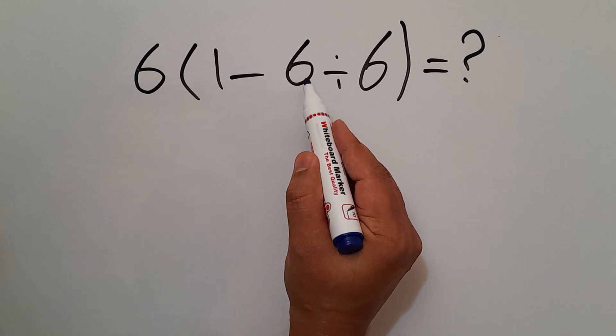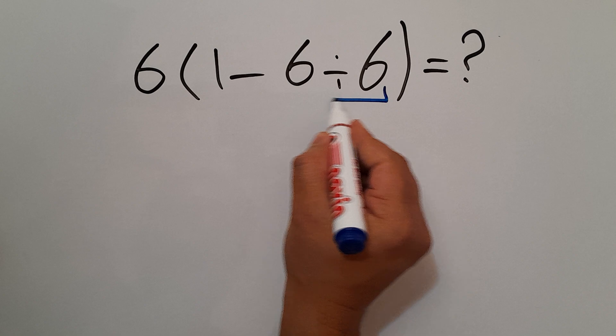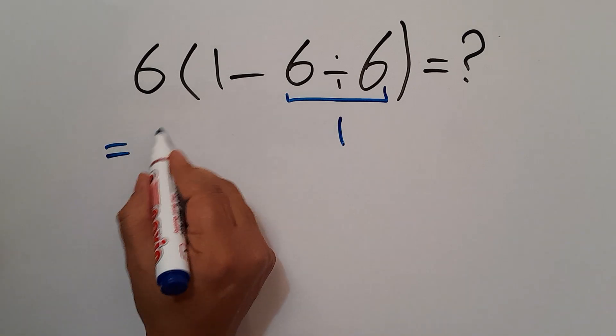So first we have to do this division. 6 divided by 6 gives us 1, so we have 6 times 1 minus 1.